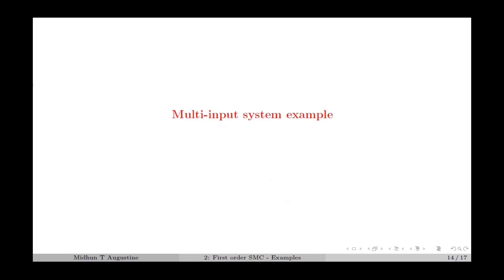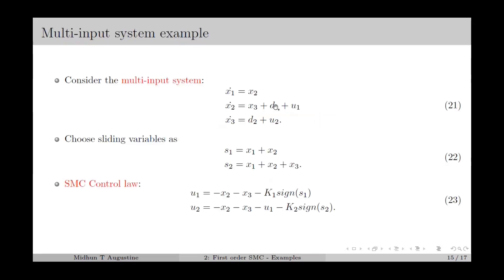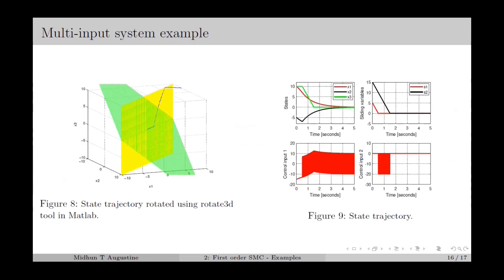Next, we consider a multi-input system example: a third order system with two inputs as given in equation number 21. For these two inputs, we select the sliding variables s1 and s2 as given in equation 22. We compute s1-dot and s2-dot by substituting the state equations, from which we derive the control inputs u1 and u2 as in equation number 23. Figure 8 shows the state trajectory of the multi-input system with the SMC control law, starting from some initial condition and converging towards the origin. All three states converge to the origin, and the sliding variables s1 and s2 also converge to zero.